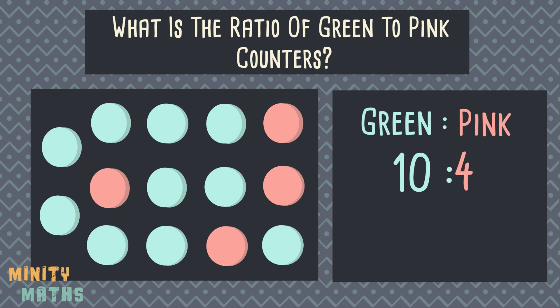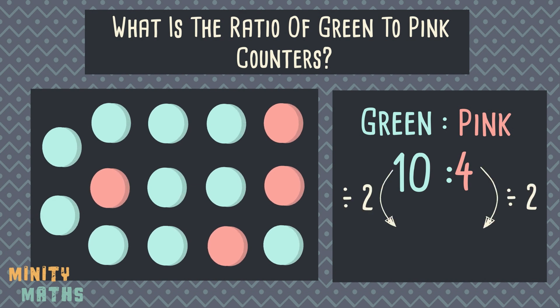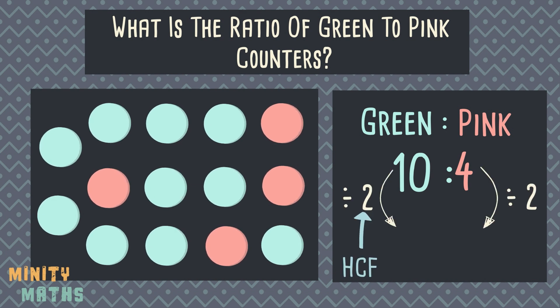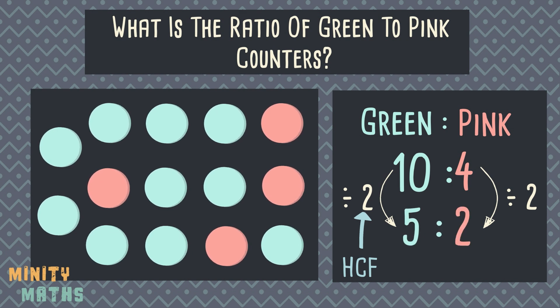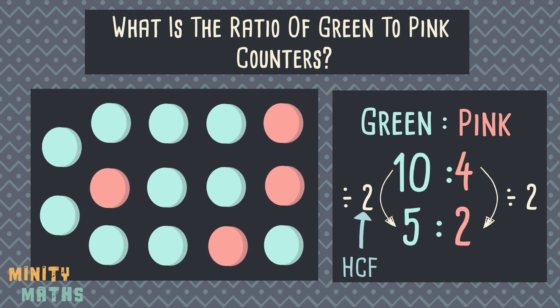To do so, we divide all numbers in the ratio by 2. This tells us that for every 5 green counters, there are 2 pink counters. We have a ratio of 5 to 2.